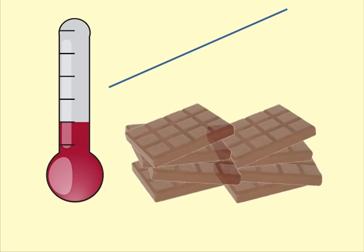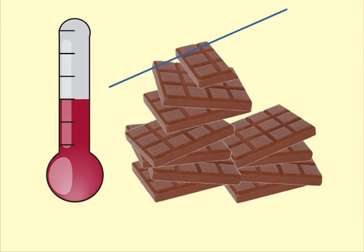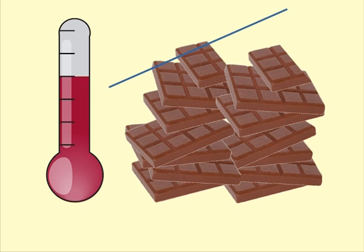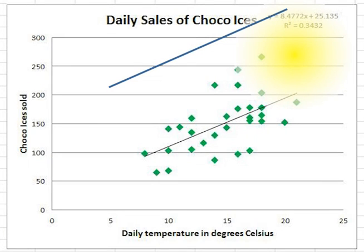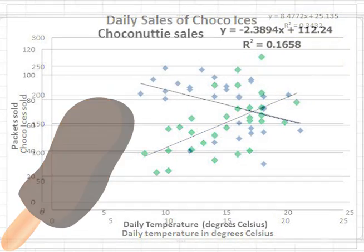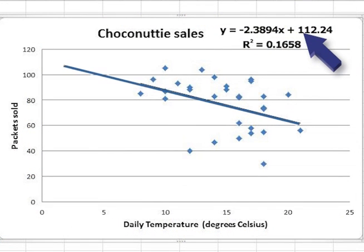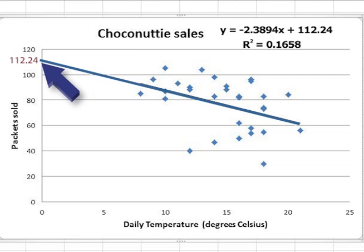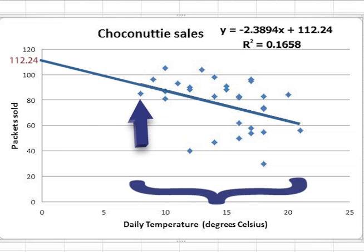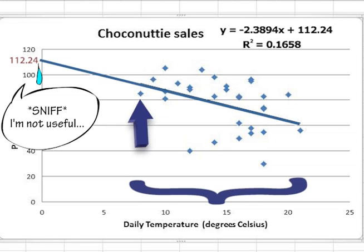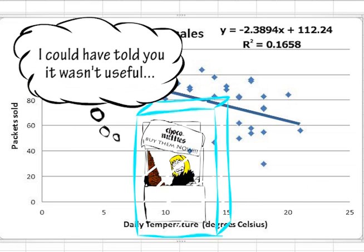If it had had a positive slope, then the daily sales would have increased by 2.4 for each extra degree of temperature. The positive relationship might be more likely for something that people like to eat on hot days, like ice creams. The intercept, 112.2, tells us how many packets Helen would sell if the temperature was zero degrees. However, this is outside the range of temperatures in the data, so the intercept is unlikely to be of any useful interpretation. This is often the case with intercept values in fitted data.